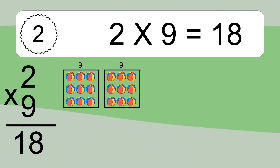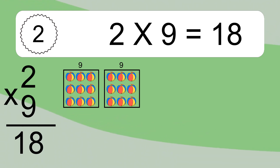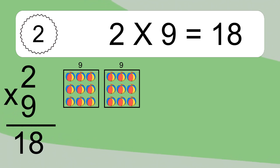We have 2 boxes, and each box has 9 colorful balls inside. If you count all the balls in all the boxes together, you will have 2 times 9 balls. This equals 18 balls.